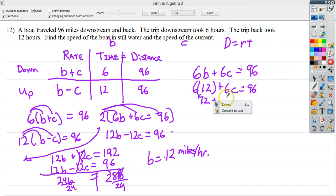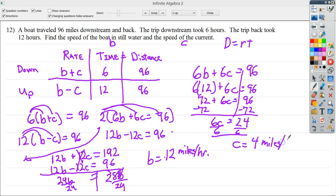So, 72 minus 72 on both sides. I end up with 6C is equal to 24. I divide by 6 on both sides. And I find my current value, or the speed of the current, anyway, is 4 miles per hour.